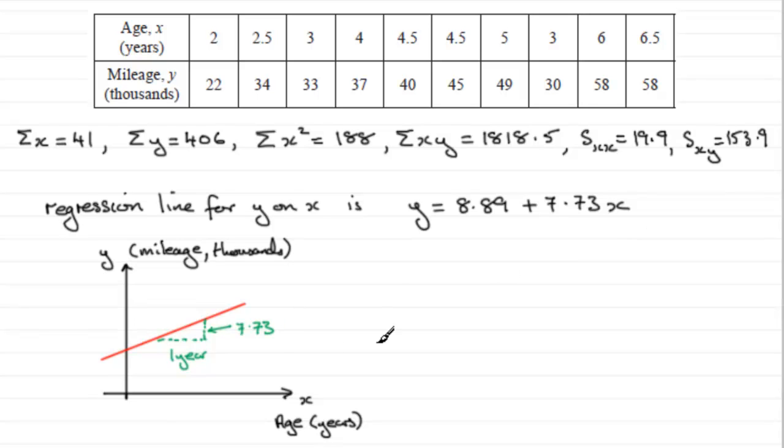So that's the kind of answer that we should be looking to put down. So I would say that for a typical car, it's going to do 7,000, let's say 7,730 miles per year.